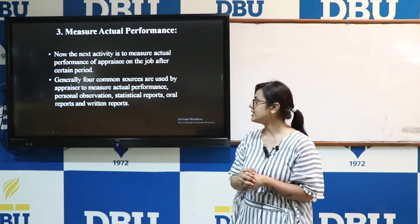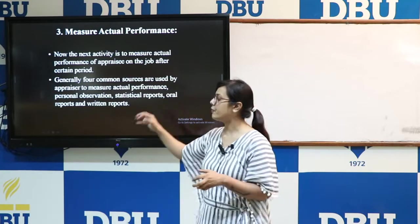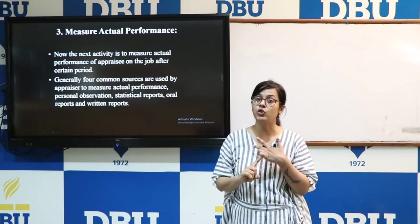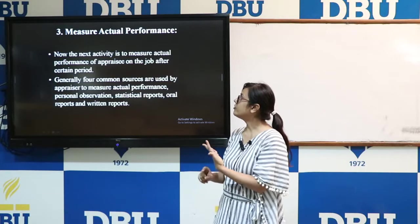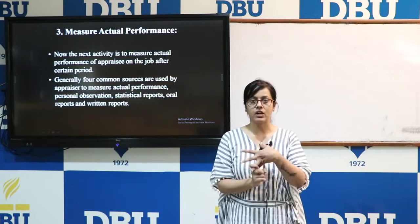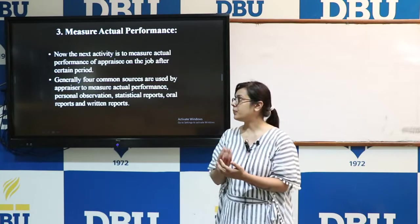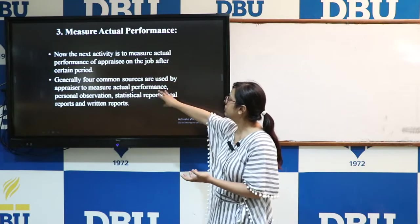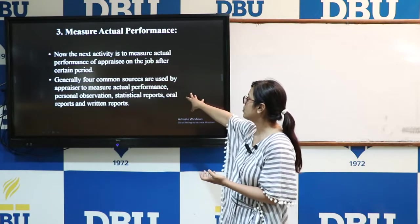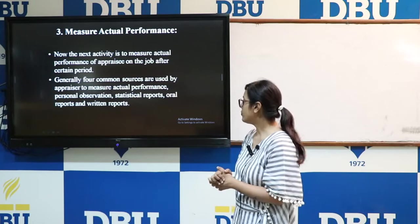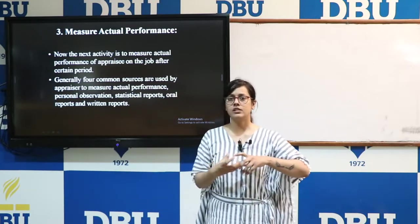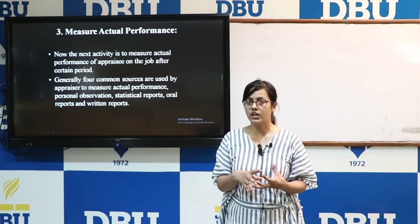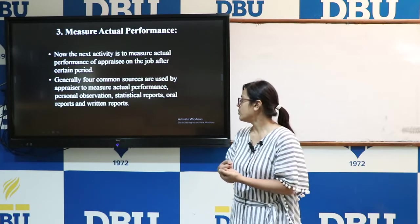The next step is to measure the actual performance. After establishing and communicating standards, the appraiser evaluates the actual performance of the employee. Generally, four common sources are used by the appraiser: the first is personal observation, where the appraiser personally observes the behavior, working conditions, and working schedules of the employees.